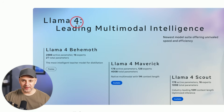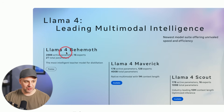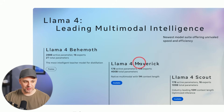Llama 4 comes in three different sizes: Llama 4 Behemoth, Llama 4 Maverick, and Llama 4 Scout. Behemoth is the large one, Maverick is the medium-sized one, and Scout is the smallest one they make.